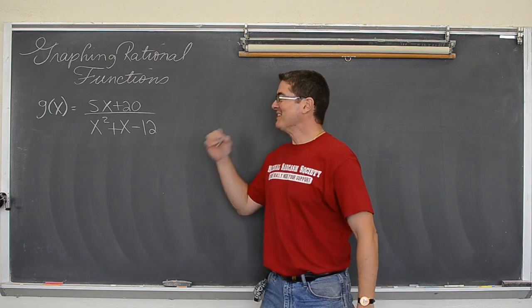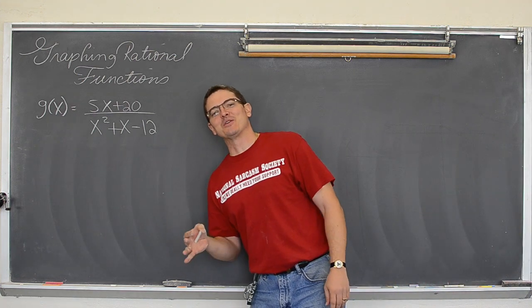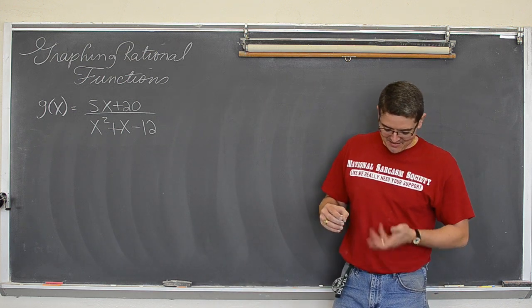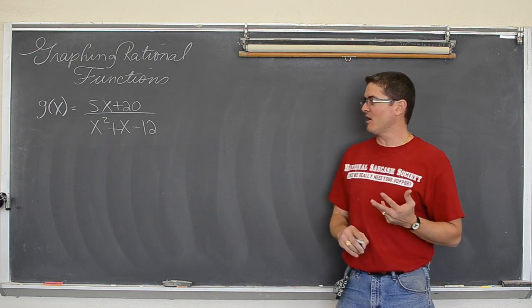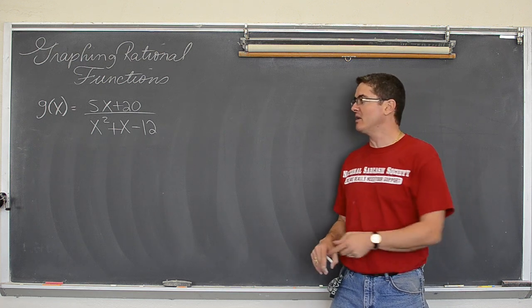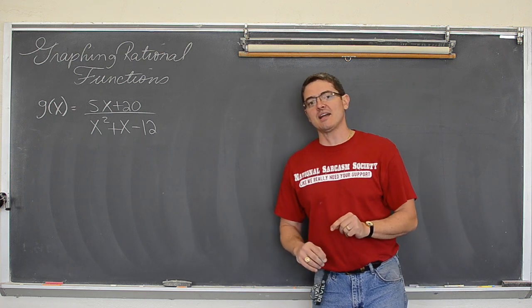Hello! Mr. Tarrou! Last example of graphing a rational function. I have done one so far with a slant asymptote. I have done one so far with a horizontal and vertical asymptote. And this one in particular is going to have a lot going on with it.